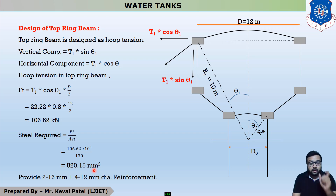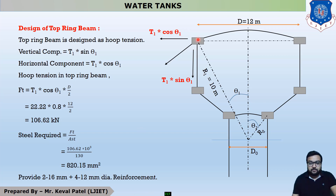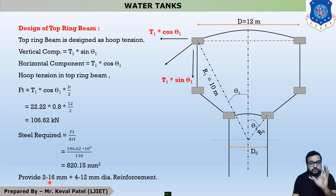Next, we find how much steel is provided. This is a beam, so reinforcement is provided in numbers. For top ring beam design, we provide higher diameters — 12 mm and 16 mm. We provide 2 numbers of 16 mm diameter plus 4 numbers of 12 mm diameter bars in the top ring beam.